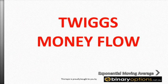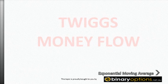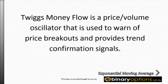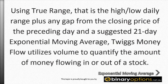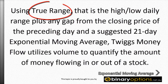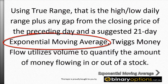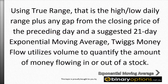Twigs Money Flow is a price-volume oscillator used to warn of price breakouts and provides trend confirmation signals. Using true range — the high-low daily range — plus any gap from the closing price of the preceding day and a suggested 21-day exponential moving average, Twigs Money Flow utilises volume to quantify the amount of money flowing in or out of the stock.